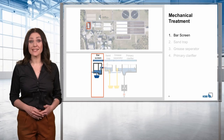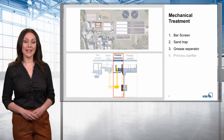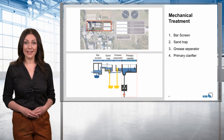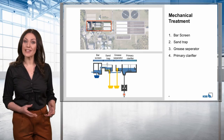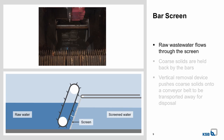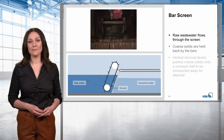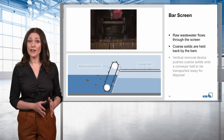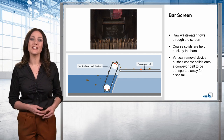Mechanical treatment starts with a screen, followed by a sand trap and grease separator, and finishes with the primary clarification. The aim of mechanical treatment is to remove all floating substances and solids from the wastewater. The screen filters coarse solids out of the wastewater. It consists of fixed bars arranged at a defined spacing. Coarse solids are held back by the bars, and a vertical removal device pushes them onto a conveyor belt to be transported away for disposal.